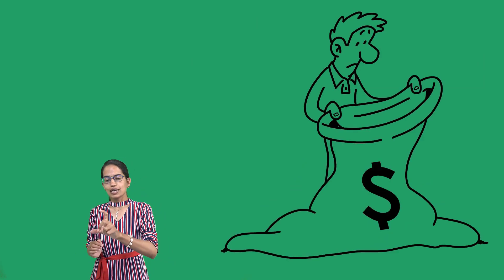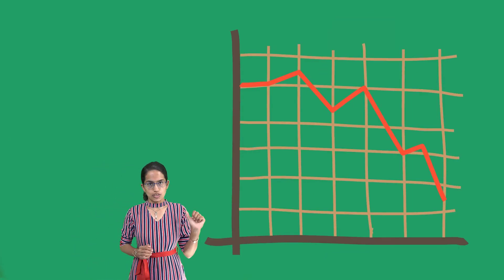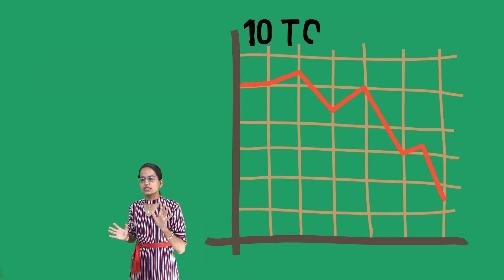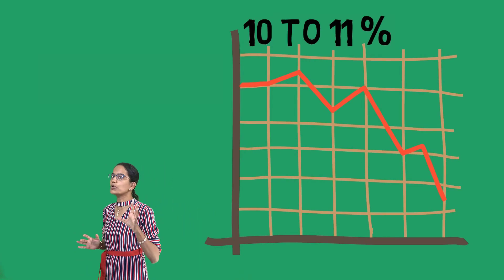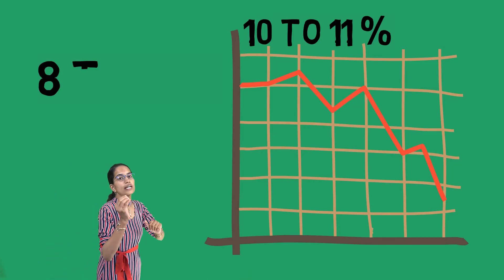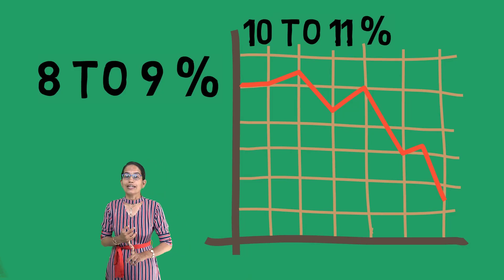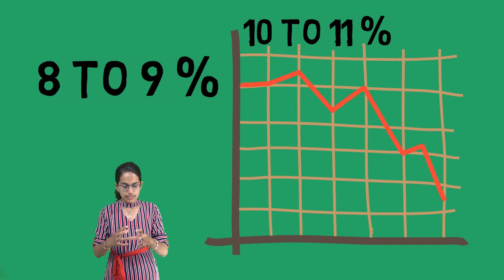This resulted in loss for the farmer's income. Also, we have seen that the moisture content has reduced significantly. On average, the moisture content is somewhere around 10 to 11%. But this time, this moisture content was 8 to 9% only. So this was another reason that has led to the acute crisis.